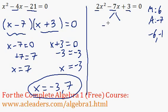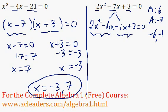So we can split up the negative 7x into negative 6x and negative 1x. We can add the 3 equals 0 and bring down the 2x squared. Now I can factor by grouping.